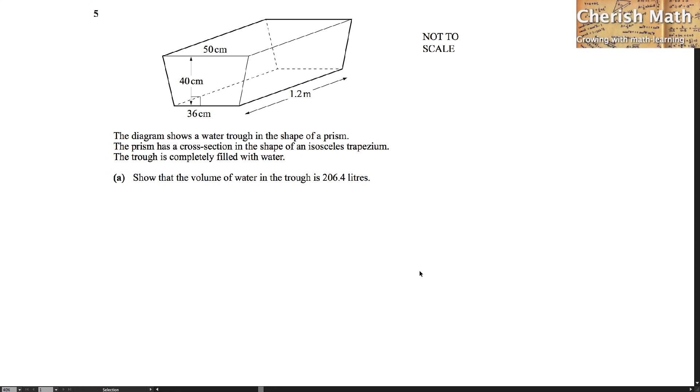Say hi from Cherish Math. Today we're going to deal with question number five, and here is the diagram. The diagram shows a water trough in the shape of a prism. The prism has a cross section in the shape of an isosceles trapezium. The trough is completely filled with water.